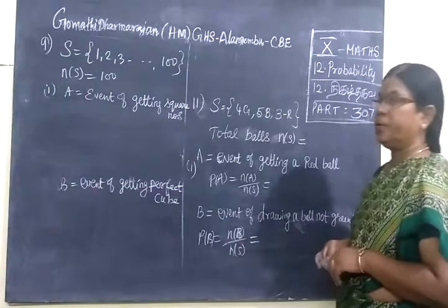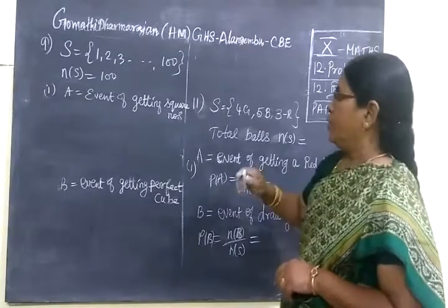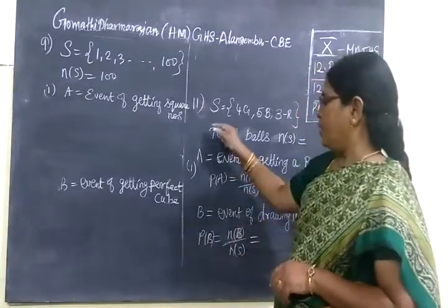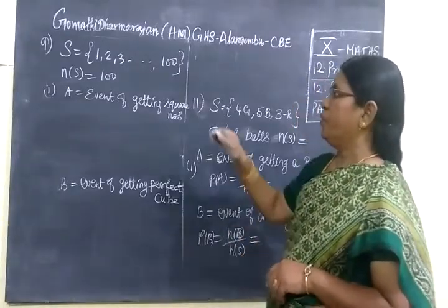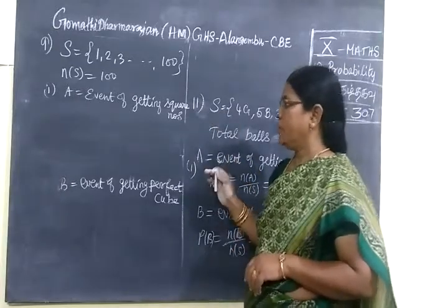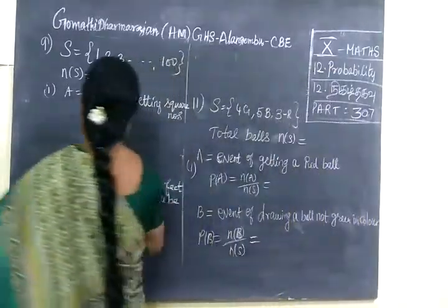Now we want to see part 307. We are given 9th and 11th sum. We are given 1 to 100 numbers. In that we are selecting event of perfect square numbers.